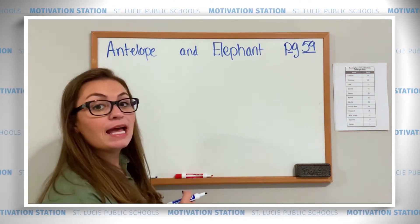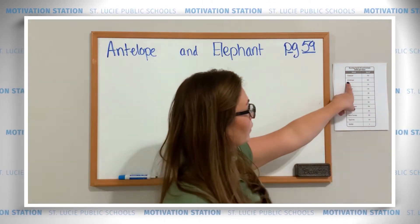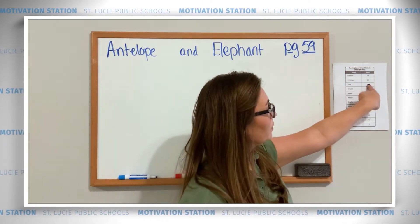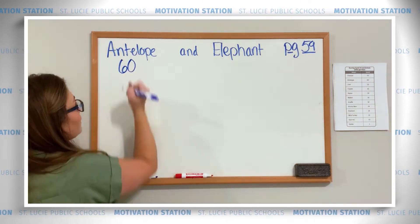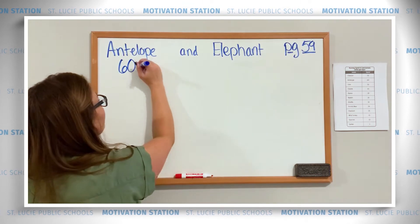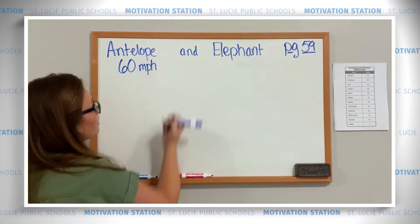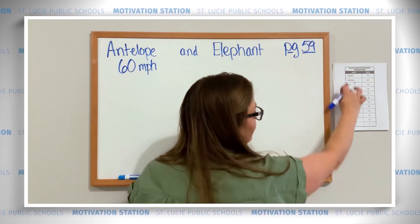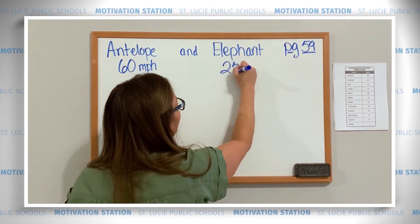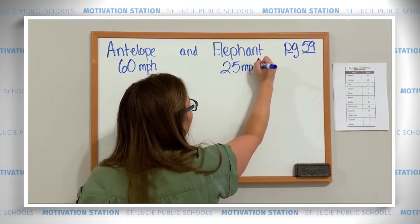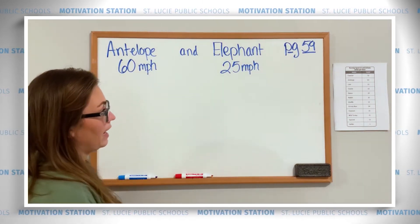Question one asks me to compare the antelope and the elephant. The antelope goes 60 miles per hour — the abbreviation for miles per hour is MPH. The elephant goes 25 miles per hour. Go ahead and fill in those speeds now.